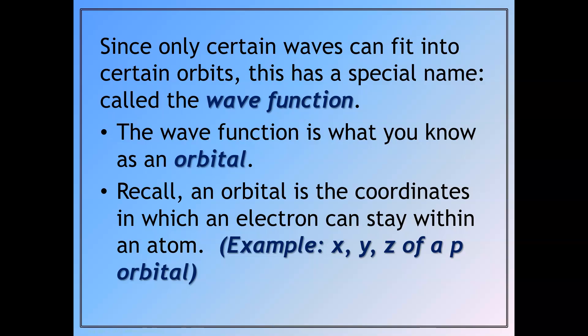So for example, we know that in the P orbital, I guess I should say the P sublevel, the orbitals that comprise that sublevel is a Px, a Py, and a Pz.